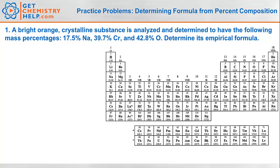Number 1 says a bright orange crystalline substance is analyzed and determined to have the following mass percentages: 17.5% sodium, 39.7% chromium, and 42.8% oxygen. It wants to know what is the empirical formula.